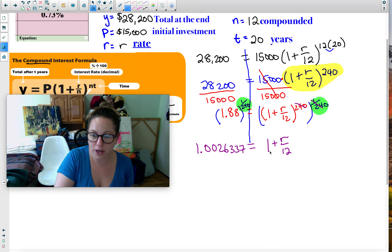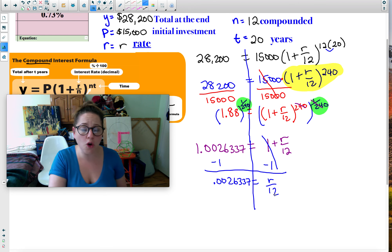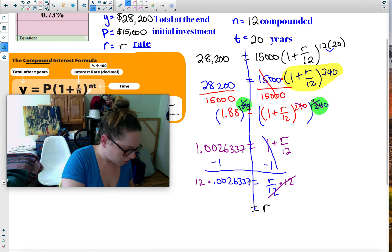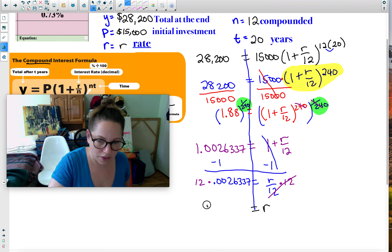I want to get r by itself, so I need to get rid of that 1. Because the 1 is positive, I subtract it on both sides. This leaves me with 0.0026337 equals r over 12. I'm so close, r is almost by itself. All I have to do now is get rid of that divided by 12. What's the opposite of divided? Multiply. So I multiply by 12, and whatever I do to one side I do to the other. Divide and multiply cancel, and r is by itself. Multiply that by 12, and I end up with 0.031605. Remember, six decimal places or more.